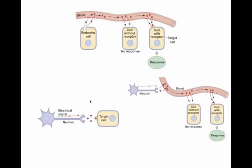Other types of long-distance communication — of course, we have neurons. These would be the neurotransmitters. And then we have neurons that actually produce molecules that travel throughout the blood. We call these neurohormones.